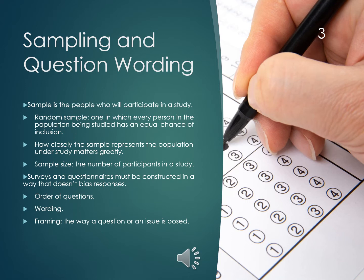Question wording is so important when we write surveys — we need to make sure that participants can understand what they're being asked. We want to make sure there's no bias written into the questions and that we frame the questions so participants know what's being asked of them. We want to avoid things like double-barreled questions, where we're asking a question within a question.